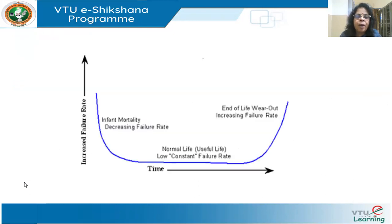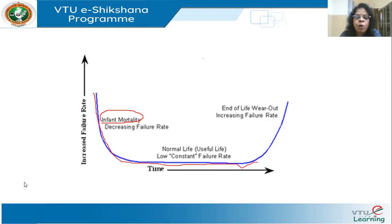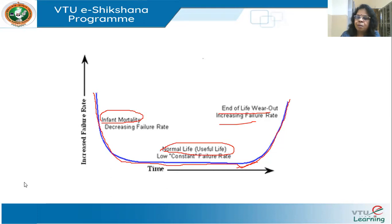Looking at the bathtub curve: it starts with a high failure rate called infant mortality, then as bugs are rectified the failure rate comes down into the useful life phase with occasional random failures, then rises again in the wear-out phase. A car, for example, has different components — battery, brakes, clutch — with different life cycles, causing failures in the wear-out phase. The bathtub curve is very commonly used to represent failures in systems and components.